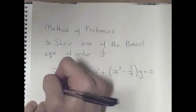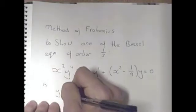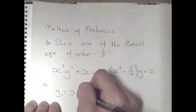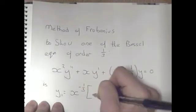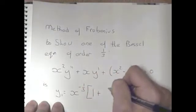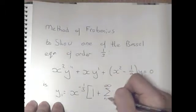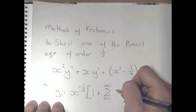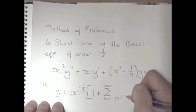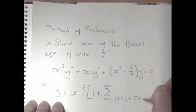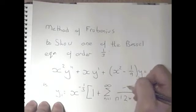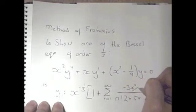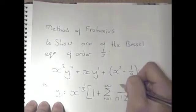You'll want to show that one of the solutions is equal to y1, which in this case is x to the minus one third, then open it up: 1 plus the summation with n equals 1 to infinity of 2 times 5 times dot dot dot times 3n minus 1, and on top of that fraction we put minus 3x squared divided by 4, all to the n.